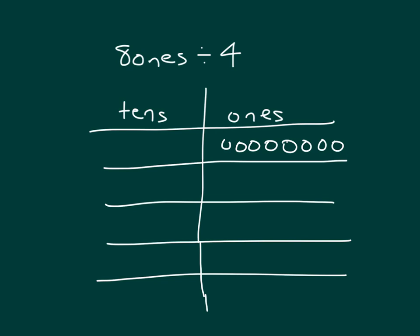Think of it kind of like dealing cards among four players. First we'll put one within each of those groups. So we took one, two, three, and four. Can we put another one in? It looks like we have four left, so we can — one, two, three, and four.